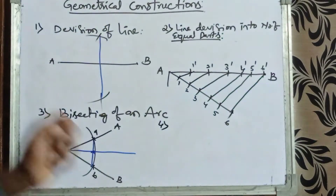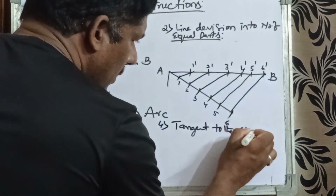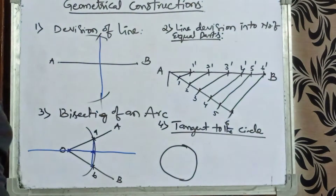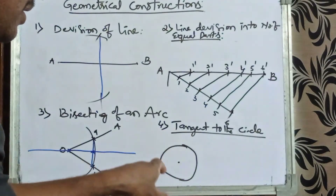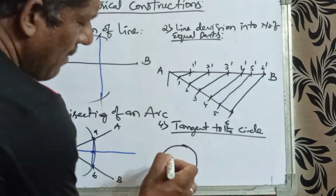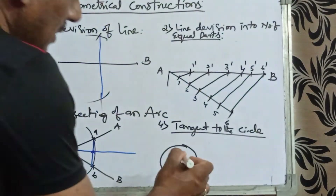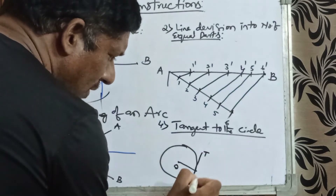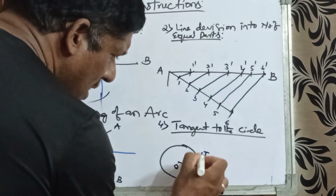The fourth one is tangent to a circle. Suppose a circle with an unknown radius is drawn. The circle touches all points on its circumference. For a tangent, from the radius center point draw a straight line towards the circumference — it touches at one point. Perpendicular to this extended line, draw a line; this line is called the tangent.